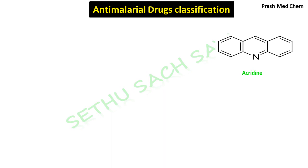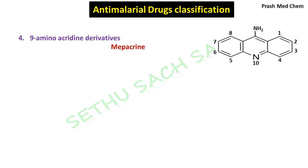The numbering starts from the benzene ring — you can start from either benzene ring. The numbering goes: 1, 2, 3, 4, 5, 6, 7, 8, 9, and 10. Now, if you substitute the ninth position of acridine with an amino group, it would become 9-aminoacridine. Mepacrine is a 9-aminoacridine derivative having anti-malarial action.